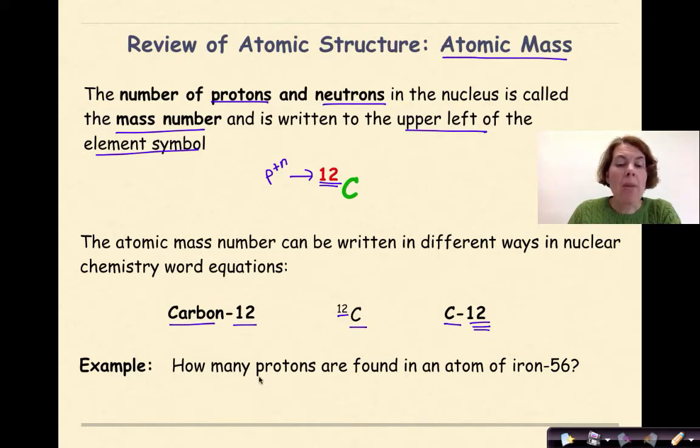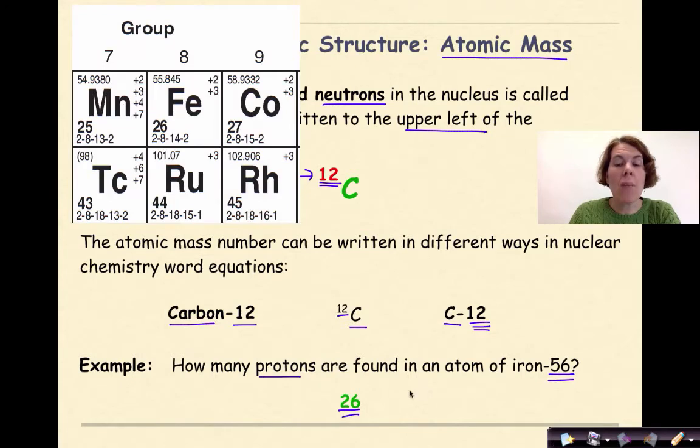So for example, how many protons are found in an atom of iron-56? Hopefully you said 26 and not 56. Because remember, the 56 is representing the atomic mass. If you look up iron on your periodic table, you will find that the number of protons, or the atomic number, is 26.